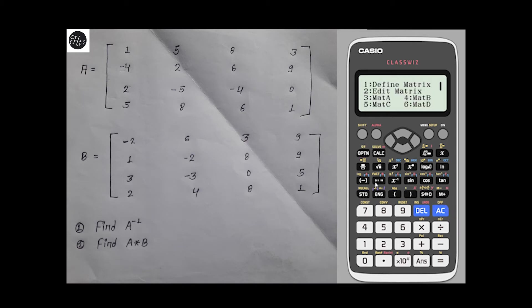Now again we'll define matrix B. Matrix B: number of rows and columns, 4 and 4. Now we have defined both matrix A and B.